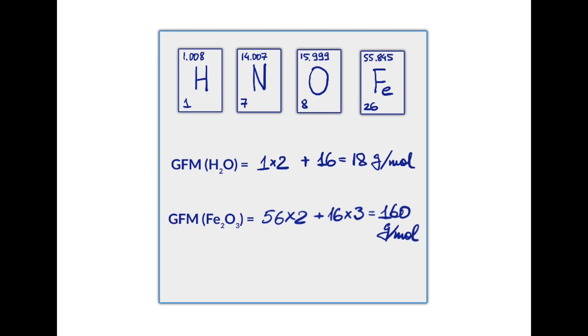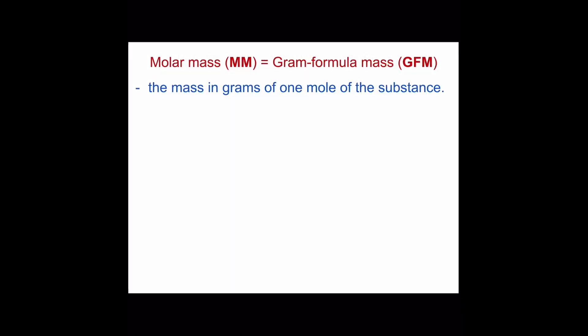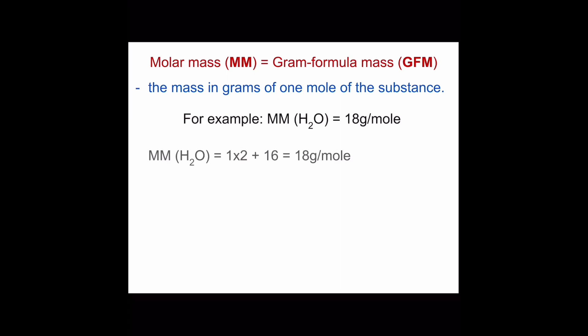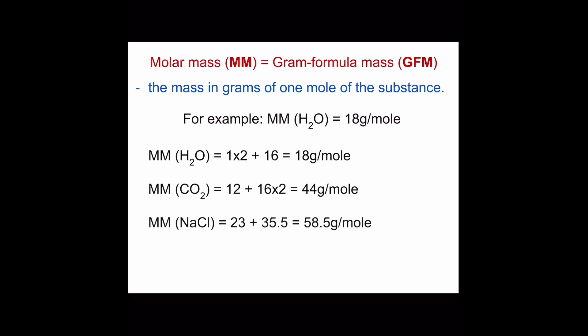The accepted gram formula mass unit is grams per mole — meaning 1 mole of that element or compound weighs that number of grams. Molar mass, or gram formula mass, is the mass in grams of 1 mole of a substance. For example: molar mass of water is 18 g/mol; molar mass of carbon dioxide is 44 g/mol (the sum of 1 mole of carbon and 2 moles of oxygen); molar mass of sodium chloride is 58.5 g/mol; molar mass of glucose is 180 g/mol (sum of 6 moles of carbon, 12 moles of hydrogen, and 6 moles of oxygen).